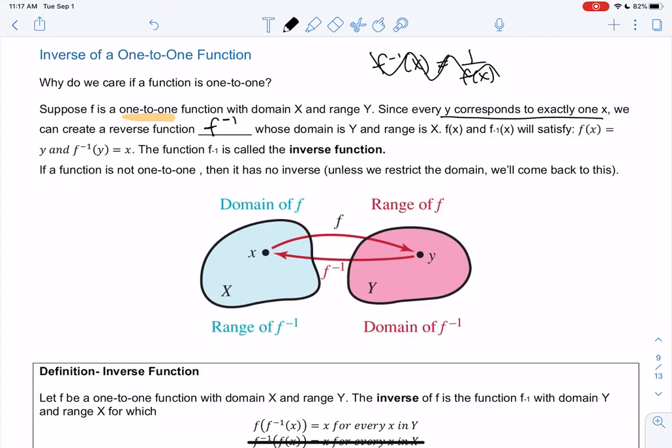The domain and range are switched. The domain was x, now the range is x. The range was y, now the domain is y. So they're reverse of each other.